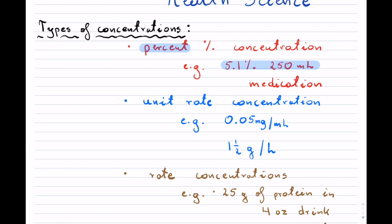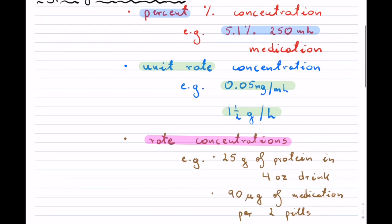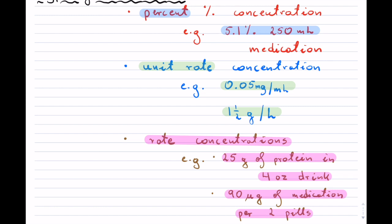The second type of concentration is unit rate concentrations. These do not only pertain to health science — they pertain to all kinds of different fields. For instance, you might have 0.05 milligrams per milliliter, or 1.5 grams per liter of some type of medication. The last type is general rate concentrations, which are written out in words, for instance: 25 grams of protein in a four-ounce drink, or 90 micrograms of medication per two pills.